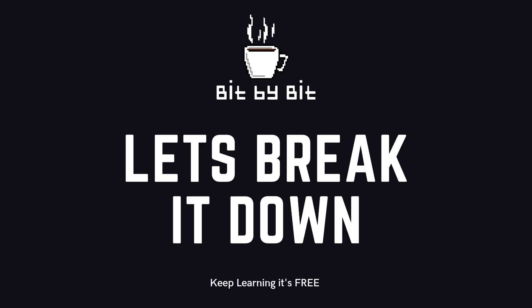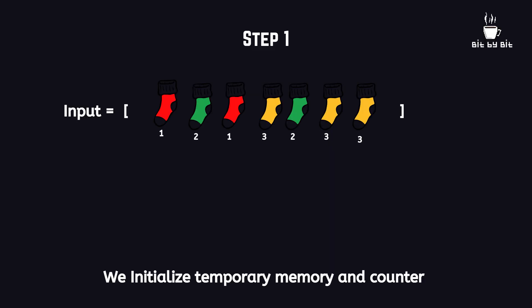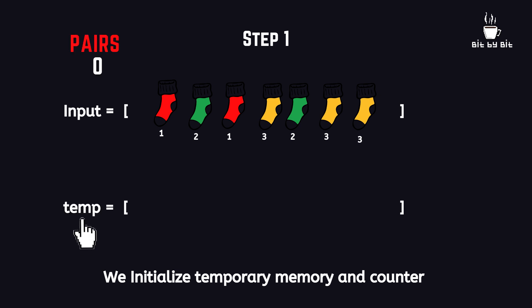Now that we understood the question, let's understand our approach towards the problem. We have an input of numbers representing socks and their colors. We initialize a temporary memory, which is another empty list or array of socks that is empty at the beginning, and a counter variable to store the total number of pairs we found, which is also the output for the problem.